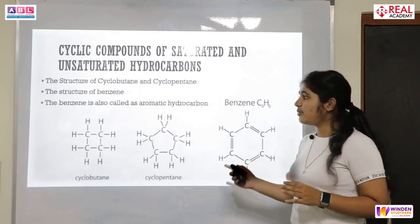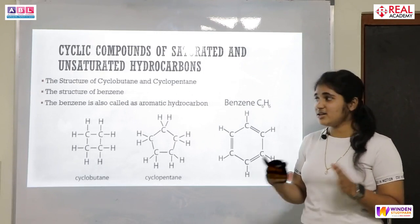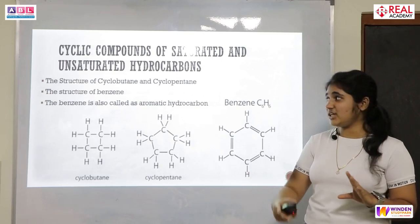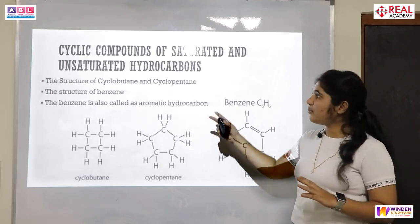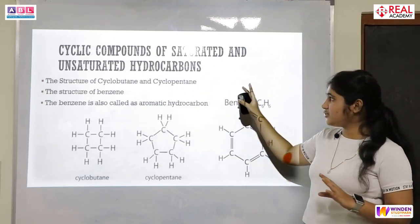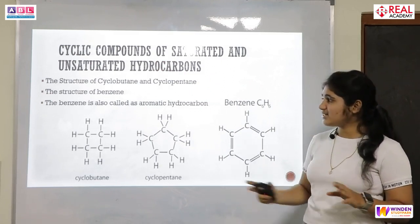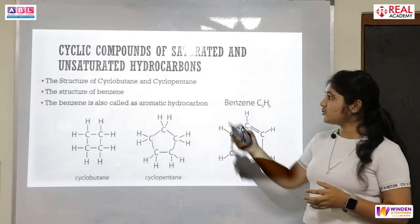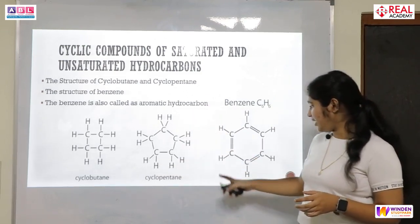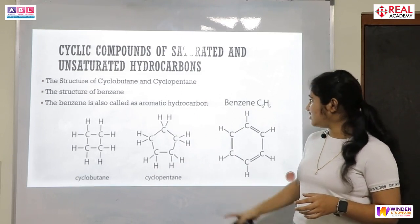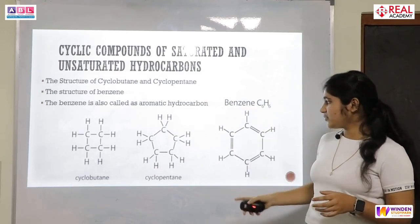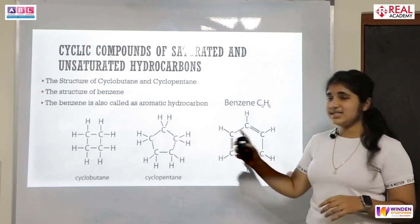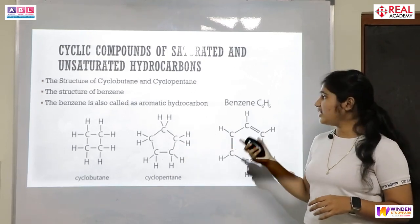We have studied saturated and unsaturated hydrocarbons in straight-chain form. Now we will look at the cyclic compounds of saturated and unsaturated hydrocarbons. These are the same types but in a cyclic structure. Here we can see the structures of cyclobutane, cyclopentene, and benzene. Benzene is an unsaturated aromatic hydrocarbon, while cyclobutane and cyclopentene are saturated cyclic compounds.